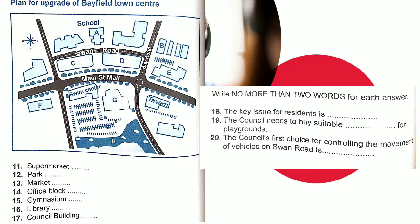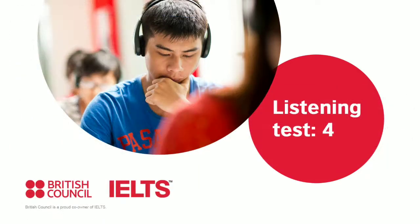As I mentioned earlier, traffic may become a problem in Swan Road. Once Main Street has been blocked off, the council will study the speed, flow and density of vehicles on Swan Road and decide on appropriate measures. The council's preference would be to install traffic lights either side of the pedestrian crossing, but they'll consider other options to alleviate traffic problems, like diverting non-essential vehicles to a back road. Are there any questions? That is the end of Section 2. You now have half a minute to check your answers.